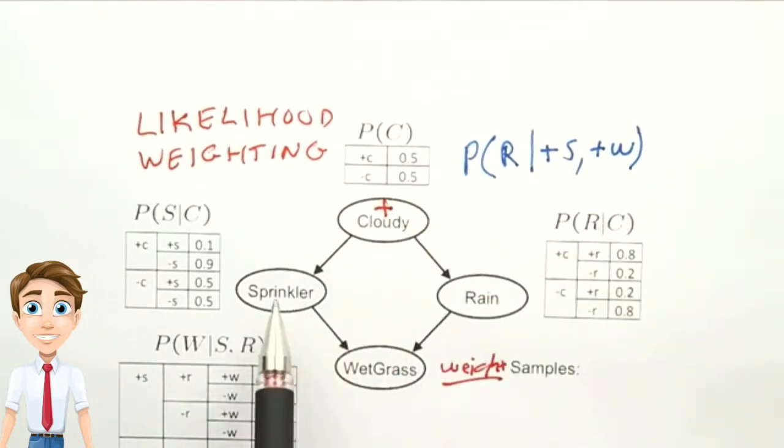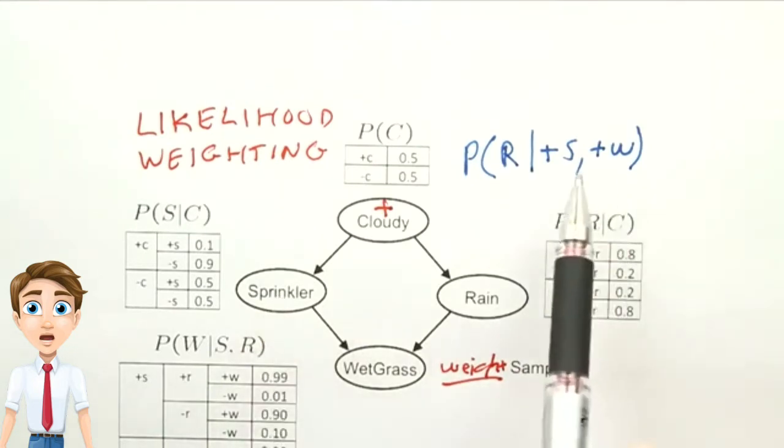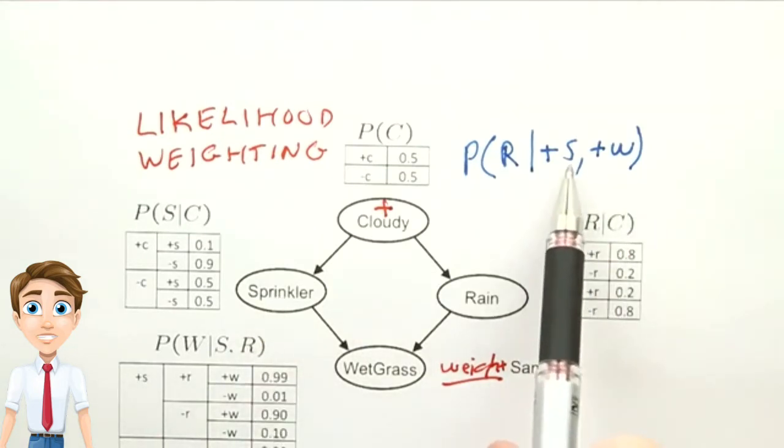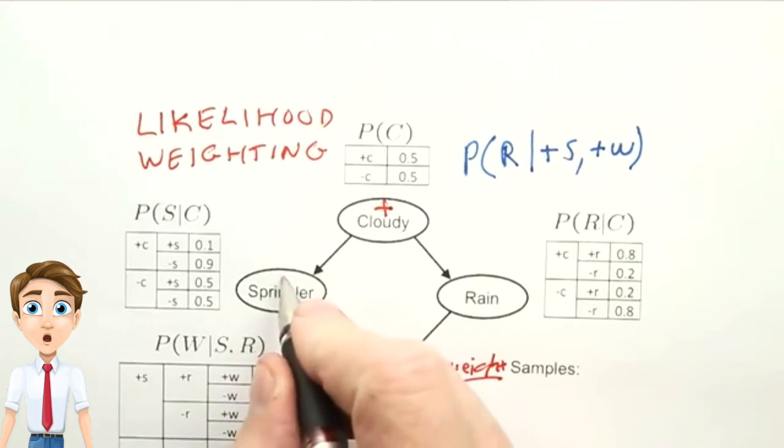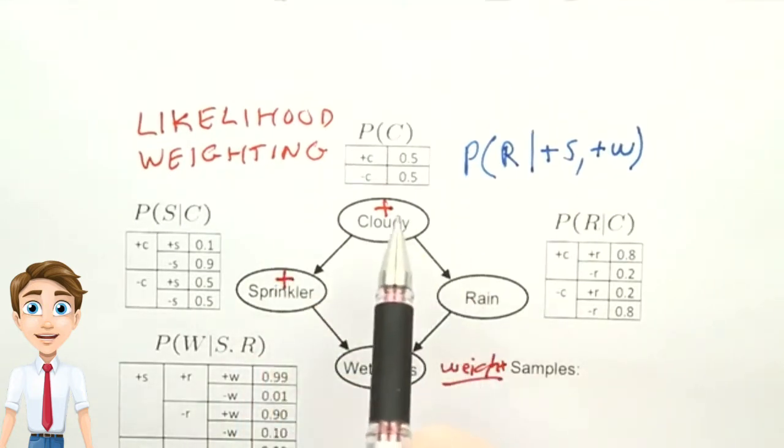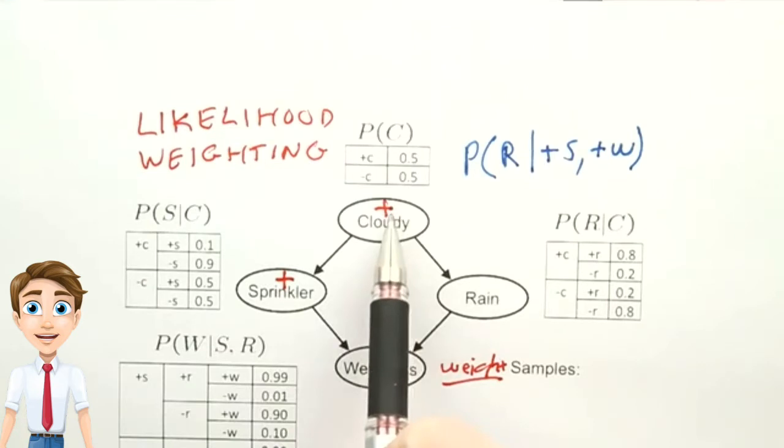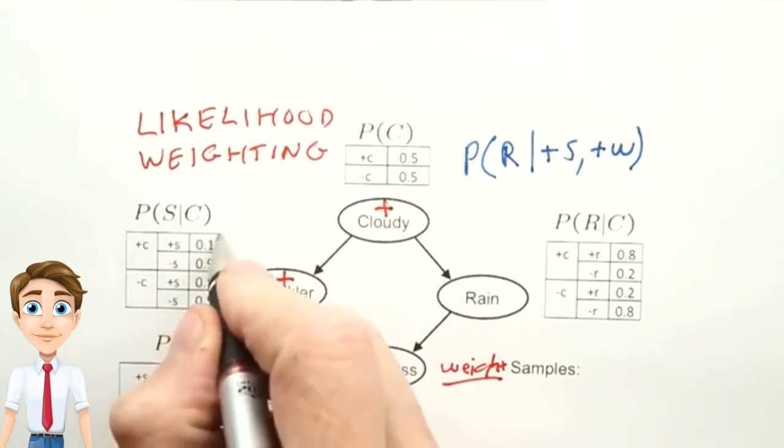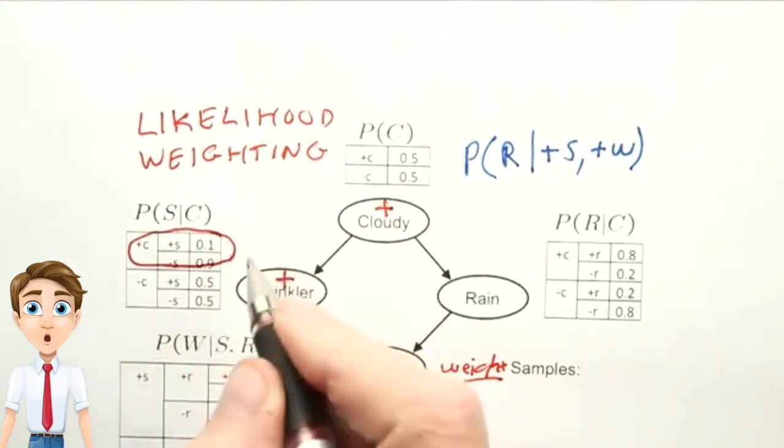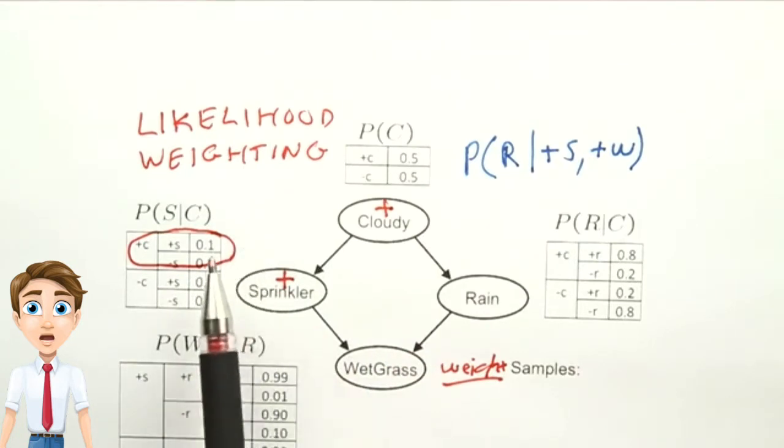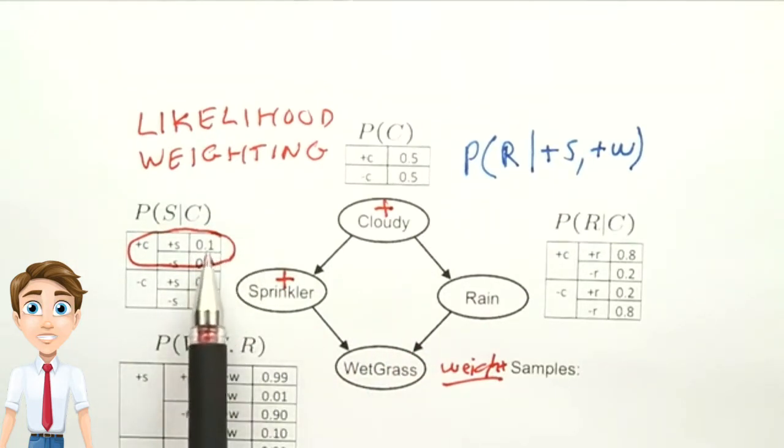Now, we want to make a choice for sprinkler, but we're constrained to always choose sprinkler being positive, so we'll make that choice. And we know we were dealing with cloudy being positive. So we're in this row, and we were forced to make the choice of sprinkler being positive. And that has a probability of only 0.1, so we'll put that 0.1 into the weight.